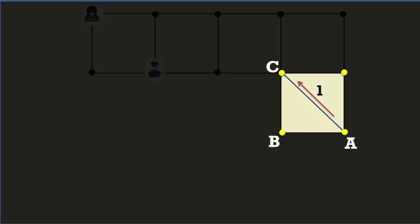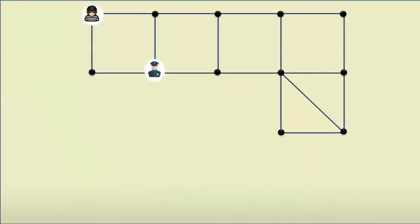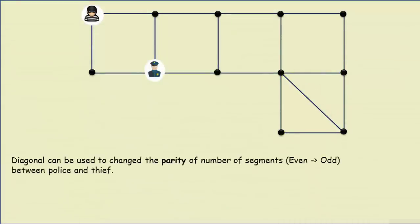So using this diagonal, the parity of number of moves can be changed from even to odd, which eventually changes the distance between police and thief from even number of segments to odd number. And once we have odd number of segments between the two, we can confidently say that the police will eventually catch the thief.